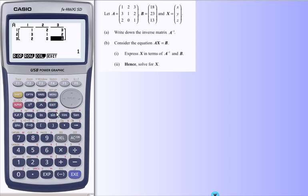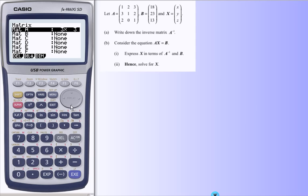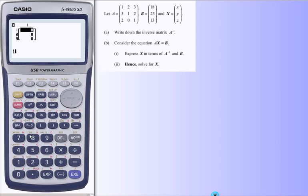Now I've got matrix A in the memory and I can use that as I wish. And just to save a bit of time, I'll put matrix B in the memory. Dimension, three rows, one column, and put that in. There it is.